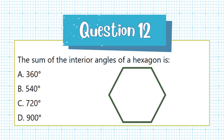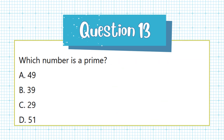Question 13. Which number is a prime? a. 49, b. 39, c. 29, d. 51.